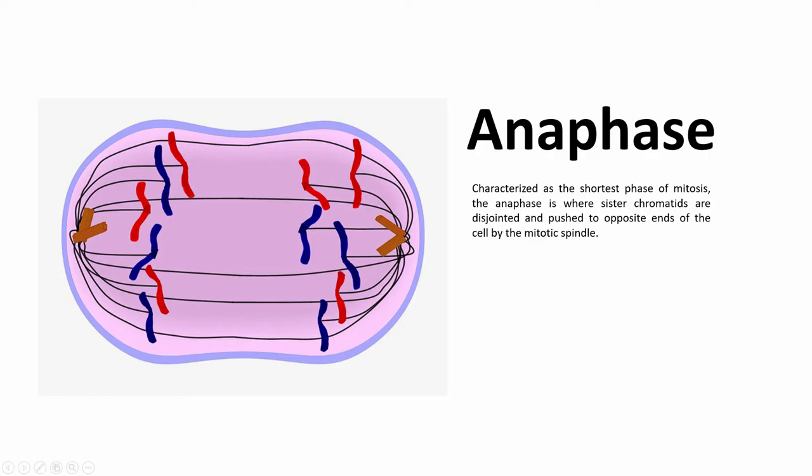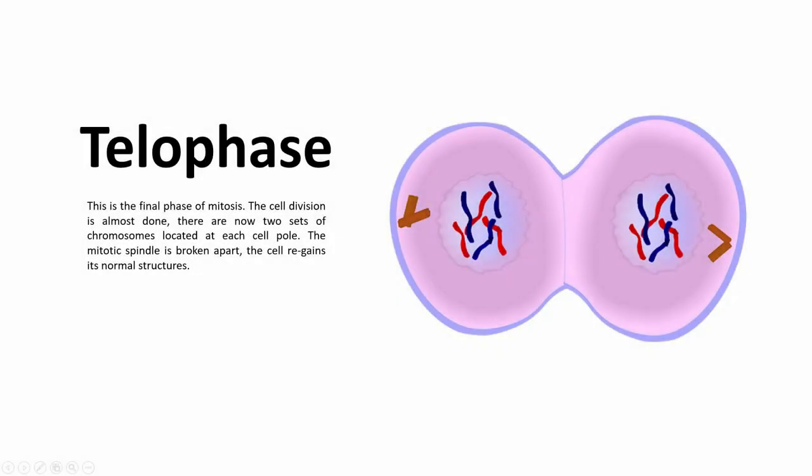Following anaphase is telophase, the final phase of mitosis. The cell division is almost done. There are now two sets of chromosomes located at each cell pole. The mitotic spindle is broken apart and the cell regains its normal structures. By referring to the image, you can really see that the cell is turning into two new cells, though as you look closer, they're still not completely separated.